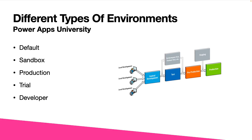Moving on, we have about five different types of environments. Those would be the default environment, sandbox environment, production, trial, and developer environments. Out of these, there are really only three that I think are most important to understand, and that is the default, sandbox, and production. Now we'll go on and cover each environment in order.